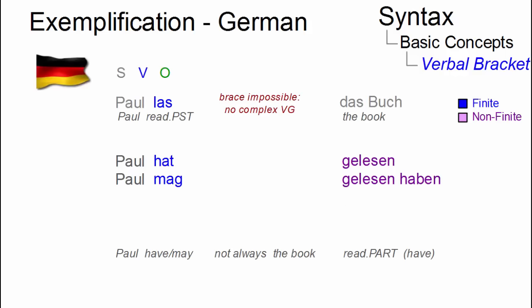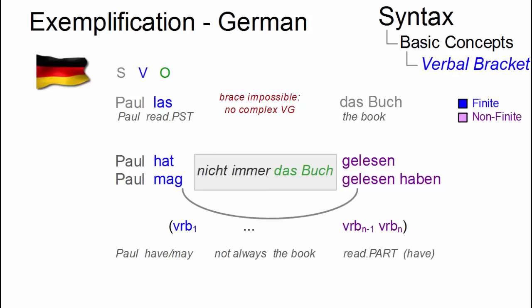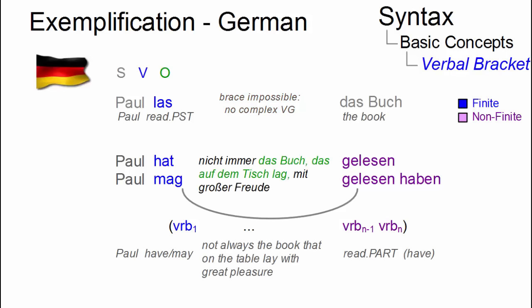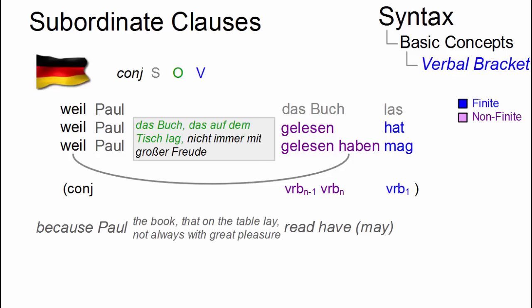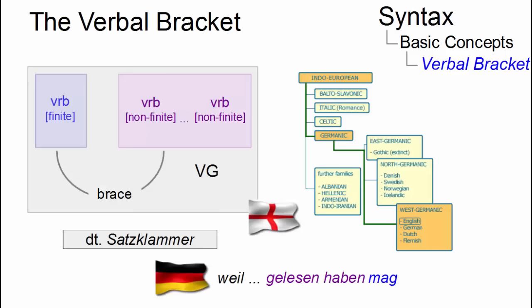In the German equivalent sentences, all complex verb groups exhibit a bracket and, as you can see here, the material inside the bracket may even include the object, and its size is theoretically unrestricted. In German subordinate clauses with an SOV word order, the term verbal bracket has been extended to include the initial subordinating conjunction and all clause-final verbal elements, and its length, again, can be theoretically unrestricted. In English, the term verbal bracket is used for verbal elements only.